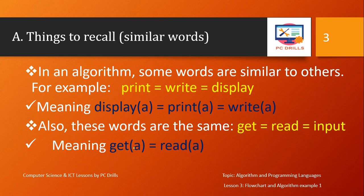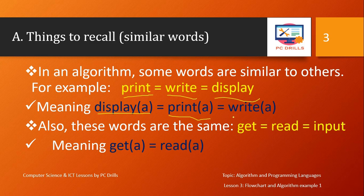Similar words you need to recall in programming: some words are very similar to others, but it does not mean you should just take random words since they look like synonyms. If you see the word print, or write, or display, they mean the same thing. For example, display A, print A, and write A all do the same thing. Similarly, for reading input, you have get, read, and input — they all mean the same thing.